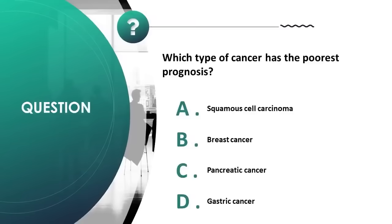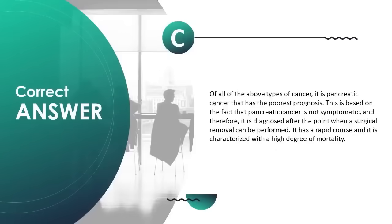Which type of cancer has the poorest prognosis? A) leukemia, B) breast cancer, C) pancreatic cancer, D) gastric cancer. Correct answer is C. Of all these types of cancer, pancreatic cancer has the poorest prognosis.